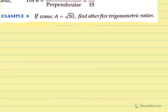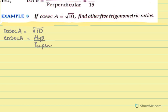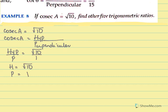If cosec A is under root 10, find the other ratios. So I start with cosec A. The definition of cosec is hypotenuse over perpendicular. Which means hypotenuse over perpendicular is under root 10 over 1. So I have my hypotenuse as under root 10 and perpendicular equal to 1. Let me draw this triangle. I will write A as the angle that I need, and this is B and C.